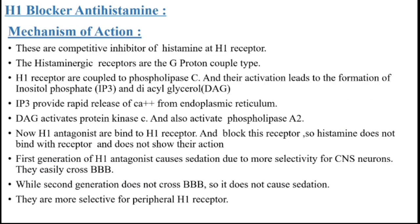Mechanism of action of H1 blocker antihistamine. These are competitive inhibitors of histamine at the H1 receptor. The histaminergic receptors are G protein-coupled type. H1 receptors are coupled to phospholipase C, and their activation leads to the formation of inositol phosphate IP3 and diacylglycerol. IP3 triggers rapid release of Ca²⁺ ions from the endoplasmic reticulum. DAG activates protein kinase C and also activates phospholipase A2. H1 antagonists bind to H1 receptors and block them, so histamine cannot bind and does not show its action. First generation H1 antagonists cause sedation due to greater selectivity for CNS neurons and easily cross the blood-brain barrier.